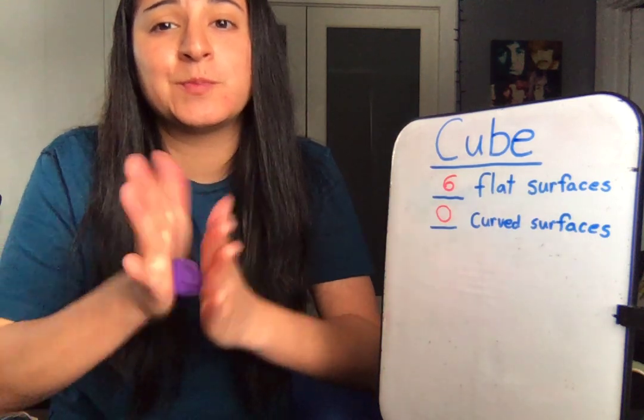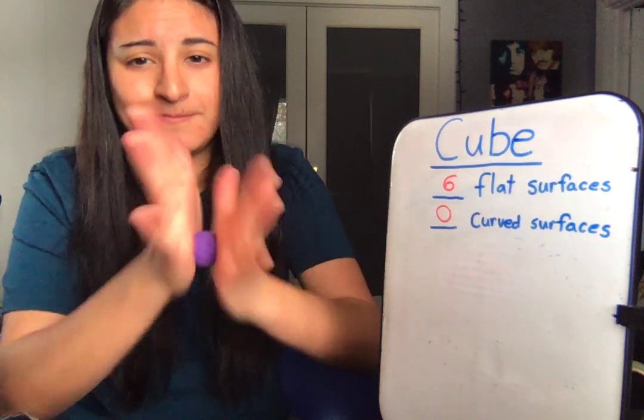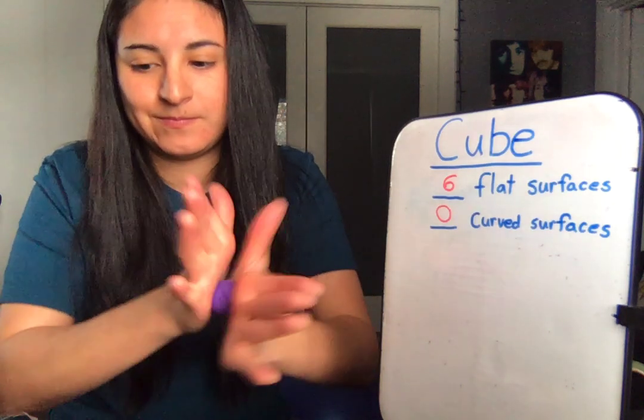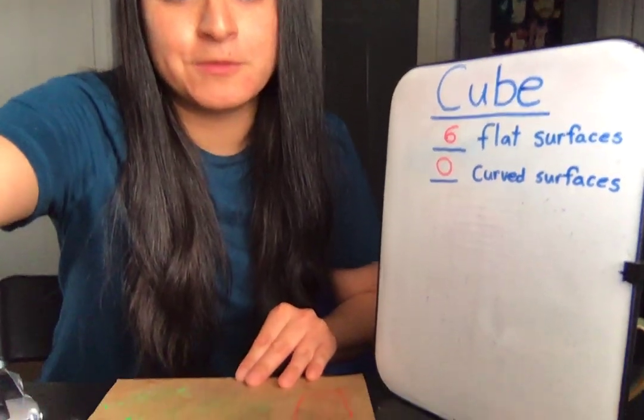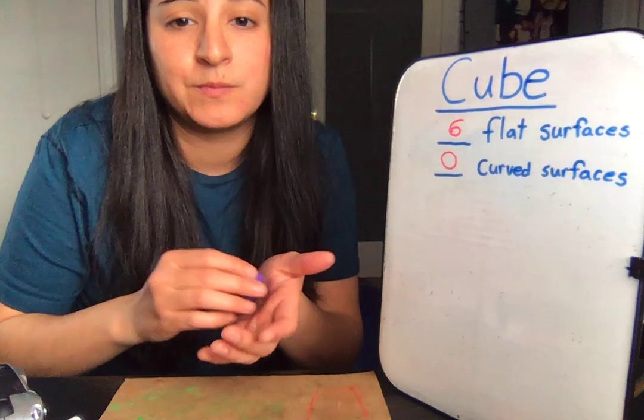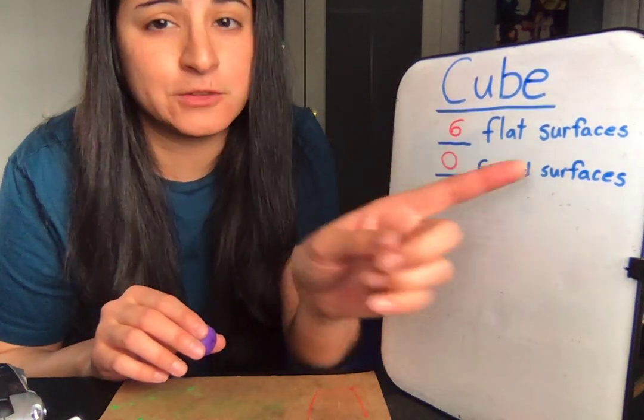Alright, the first thing we do is we make a ball. Next, we need something flat, like a table, so that we can make sure that our cube has six flat surfaces.